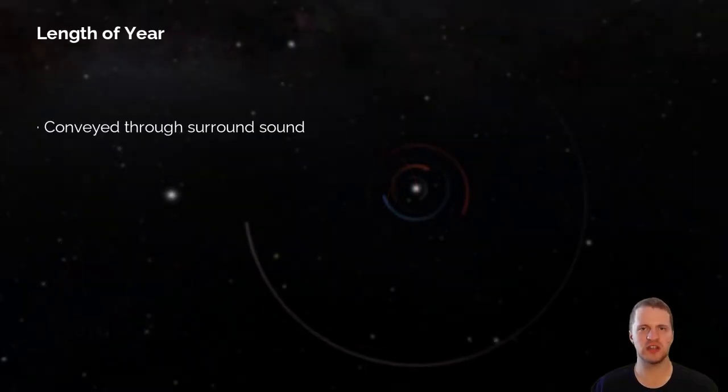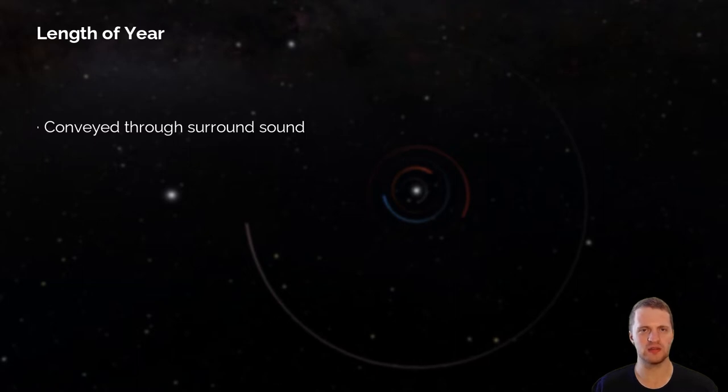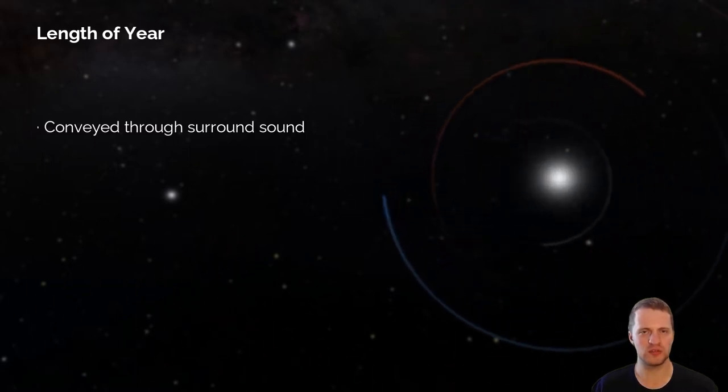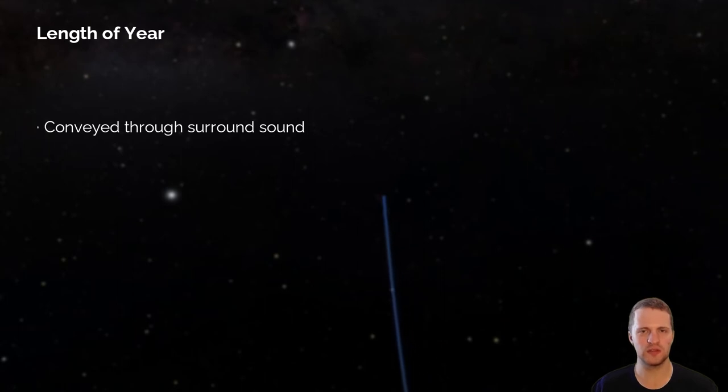Spatial positioning is used to convey the length of year, and also to separate between the planets. But since we can't easily transmit surround sound in an online environment, we have decided to only use stereo in this demonstration.